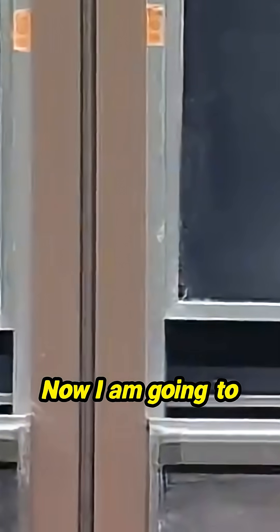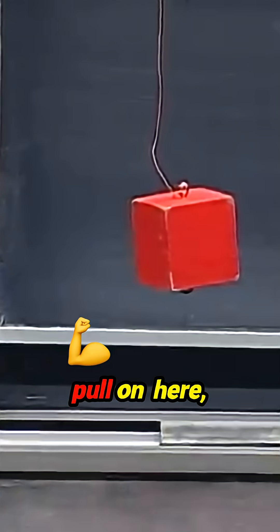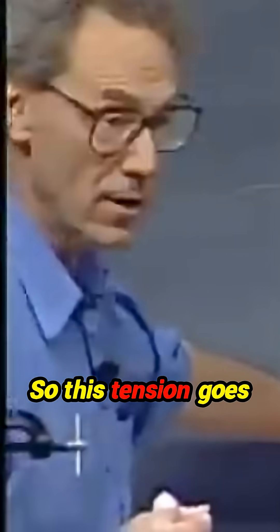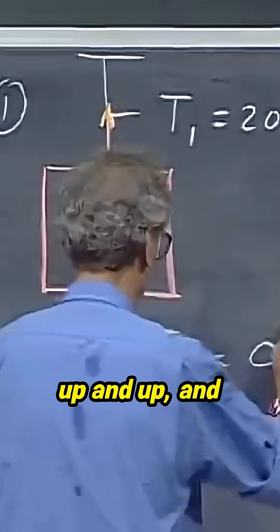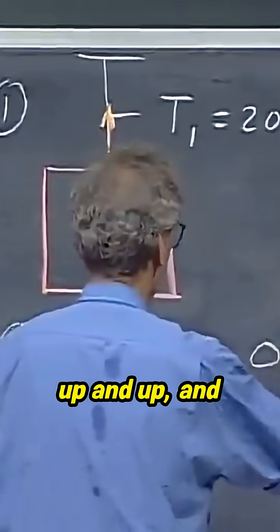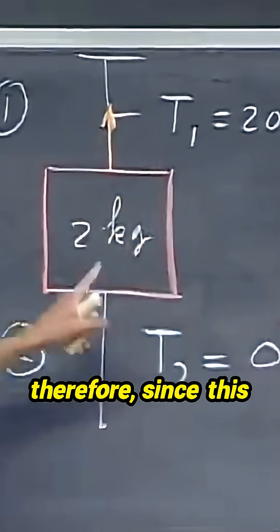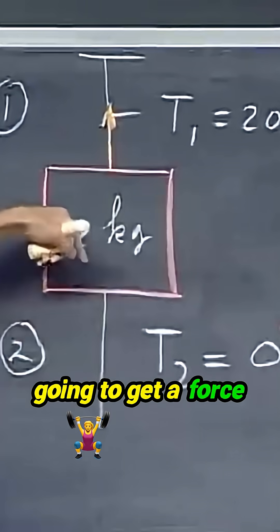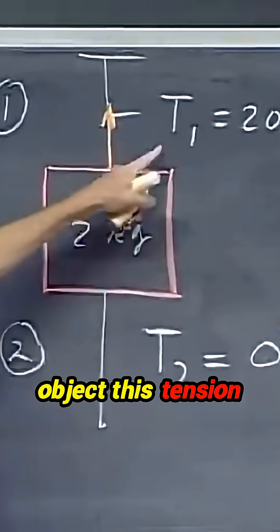Now I am going to pull on here, and I'm going to increase the tension on the bottom one until one of the two breaks. So this tension goes up and up, and therefore, since this object is not being accelerated, you're going to get a force down now on this object. This tension must increase.